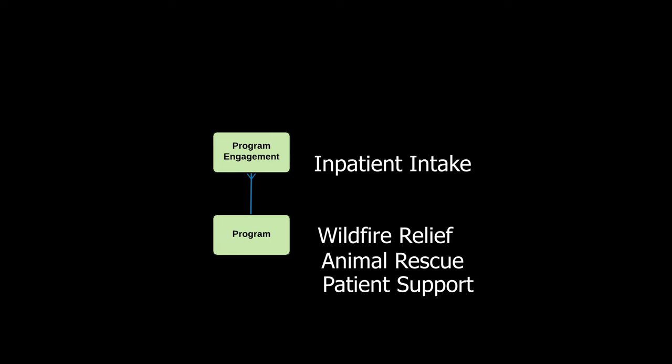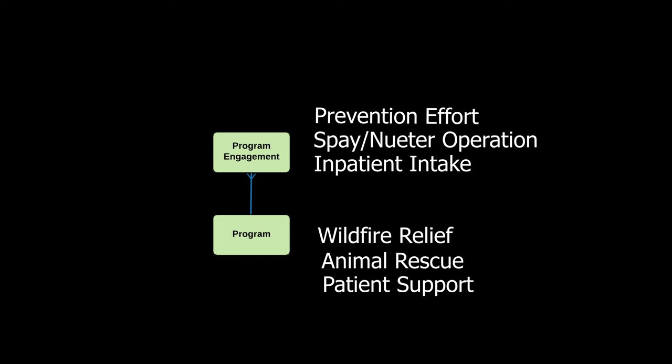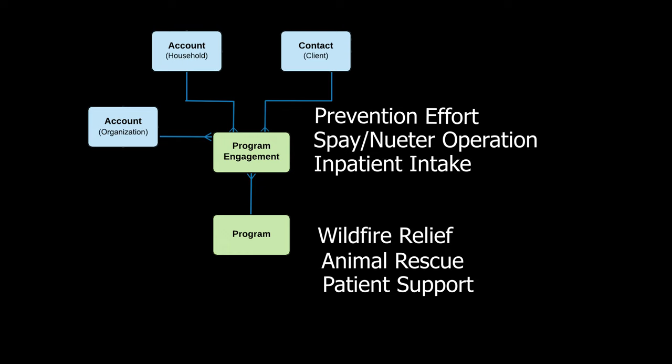The Program Engagement object records the relationship between programs and who or what they benefit. Program Engagement can be associated with contacts, organization and household accounts, or custom objects — which may come in handy if you work in service of animals, stream beds, or anything else that doesn't fit neatly in a contact or account record.